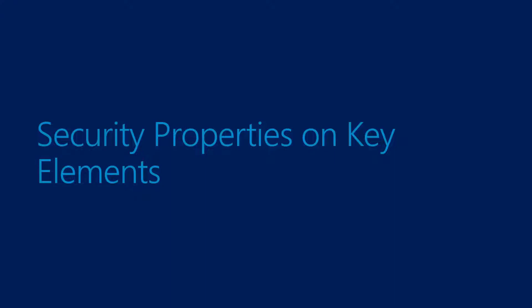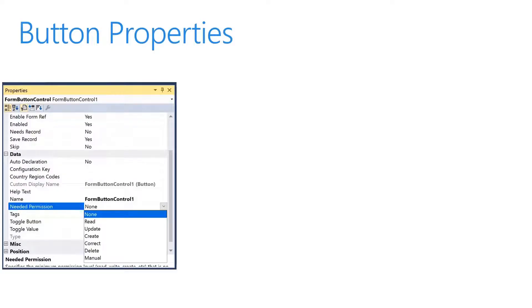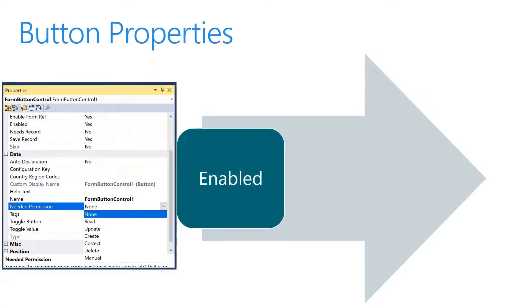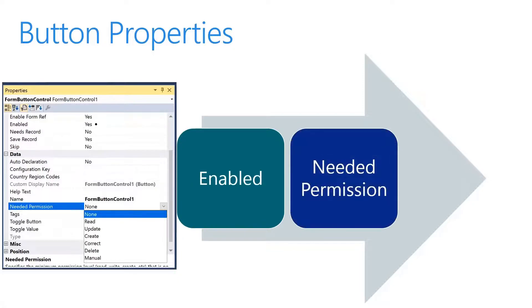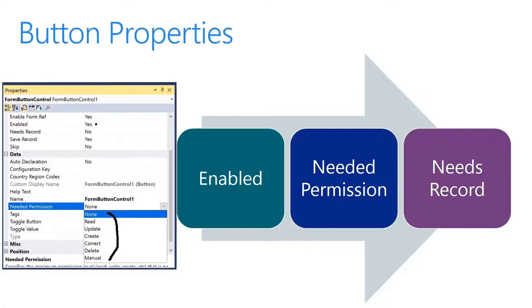Certain elements in the application explorer have properties that affect how security works. Let's look at specific button properties you can define when creating objects in the development environment for security. First is Enabled — important to ensure the object is active. Second is Needed Permission, which allows for different levels of control and access starting at the lowest level of only being able to view or read the control, all the way up to allowing deletion. The options are: None, Read, Update, Create, and Delete. Lastly, there is Needs Records.